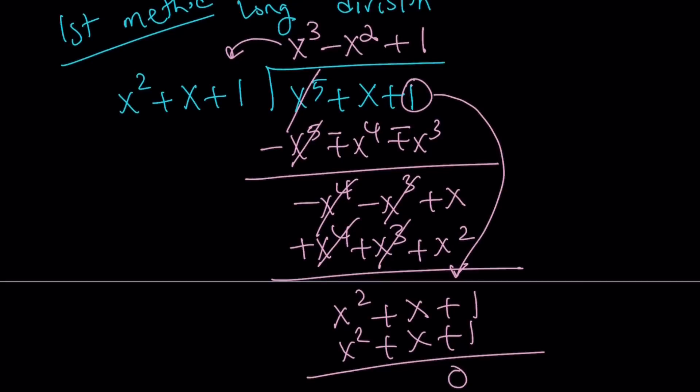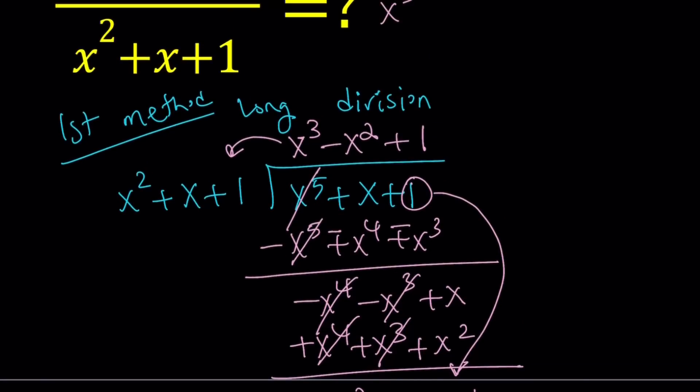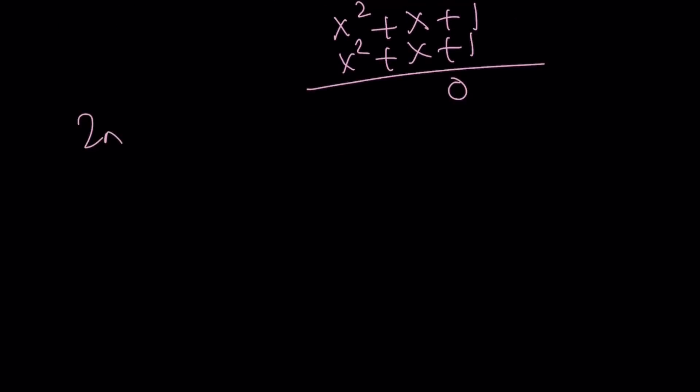Hopefully, this makes sense, and we get the answer. So, the answer is x cubed minus x squared plus one. So, when you divide, you get that. So, let's see if we can use another method for this, and that is going to be my second method.